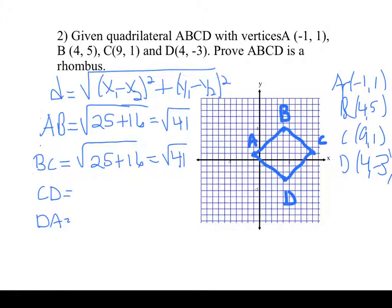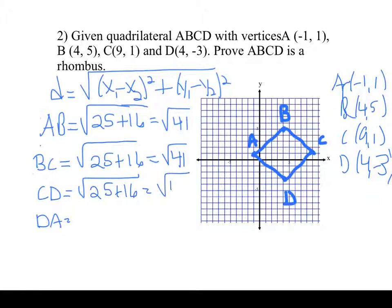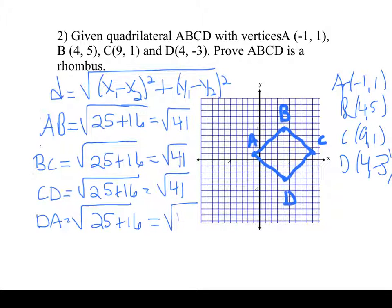I don't have to make a conclusion yet — I'm not going to make one until all four sides are congruent, because that's what I'm looking for. CD: (9 minus 4) is 5, squared is 25; (1 minus negative 3) is 4, squared is 16 — so again 25 plus 16, which is radical 41. For DA: (4 minus negative 1) is 5, squared is 25; (1 minus negative 3) is really 1 plus 3, which is 4, squared is 16. They're all radical 41!